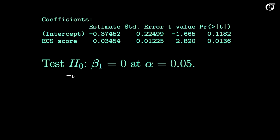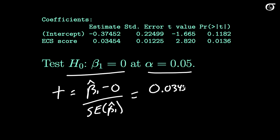Here we want to test the null hypothesis that beta 1 is equal to 0, and I'm asking you to do it at an alpha level of 0.05. Our test statistic here is simply our beta 1 hat minus 0 over the standard error of beta 1 hat. When we fill in these values, we have 0.03454 minus 0, I'm going to put that in there because that's our hypothesized value, divided by the standard error which is given in our output. Those values were found here and here. This works out to 2.82.